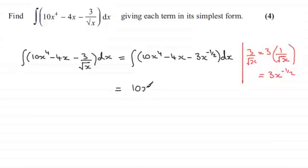So for the first term it's going to be 10x to the power 5, and we divide by that new power 5. For the next term this is 4x to the power 1, so we add 1 to the power, that's 4x to the power 2, and divide by the new power.